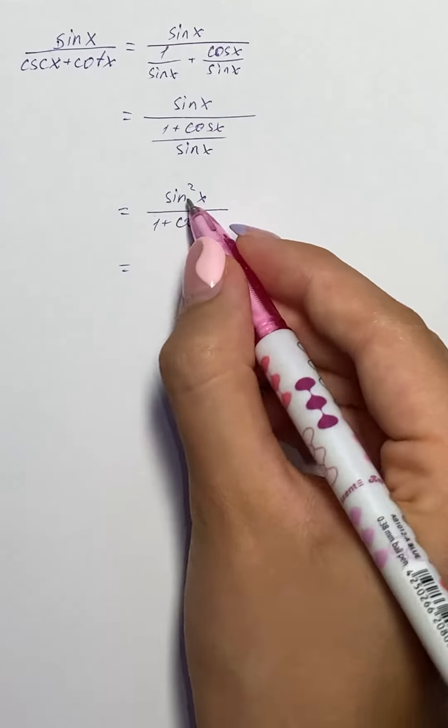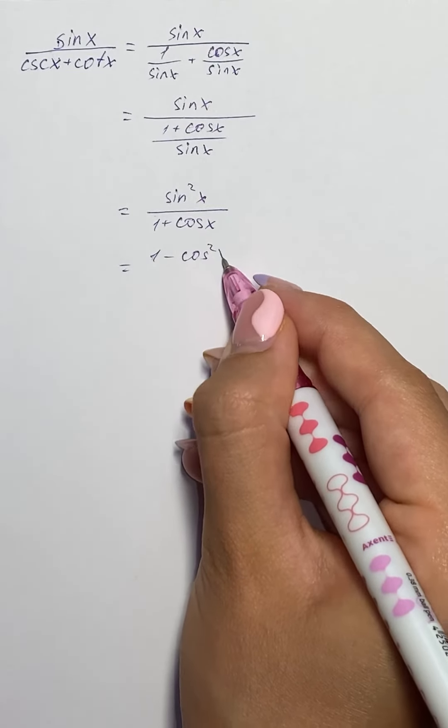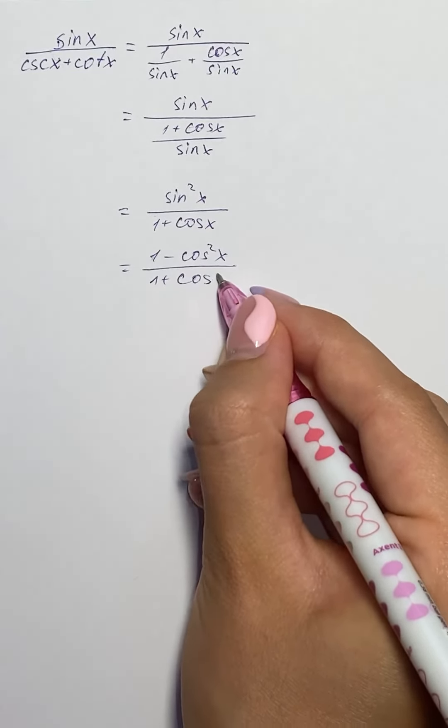And now we write sine squared of x as 1 minus cosine squared of x over 1 plus cosine of x.